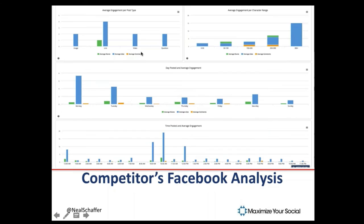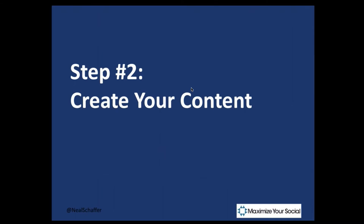As we scroll down the screen — average engagement per post type, per character range, what days we should post, average engagement per day. It's going to be very different for each one of my clients, depending on that target audience. The times of day can be critical because the life of a Facebook post is only a few hours in many cases. So if you were to do this for three or four of your clients' competitors, you're really going to get a good idea as to days, times, and types of content to help you optimize what you're doing for your clients.